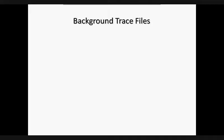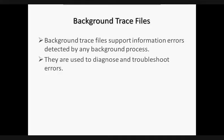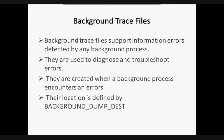Next are background trace files. Background trace files are used to log errors encountered by a background process, such as SMON, PMON, the database writer, and other background processes. These files exist only when an error requires writing to the trace files. We use these files to diagnose and troubleshoot problems. When a background trace file is created, it contains header information indicating the version number of the data server and the operating system. Its location is defined by the parameter BACKGROUND_DUMP_DEST.